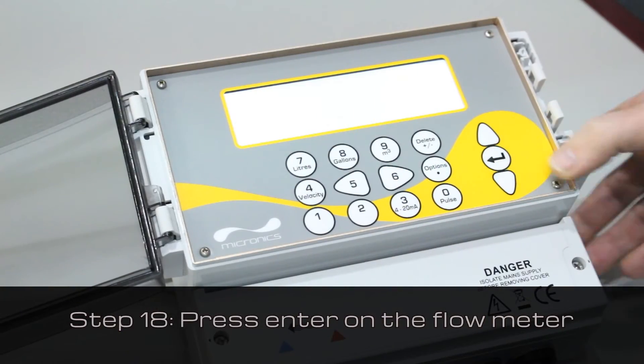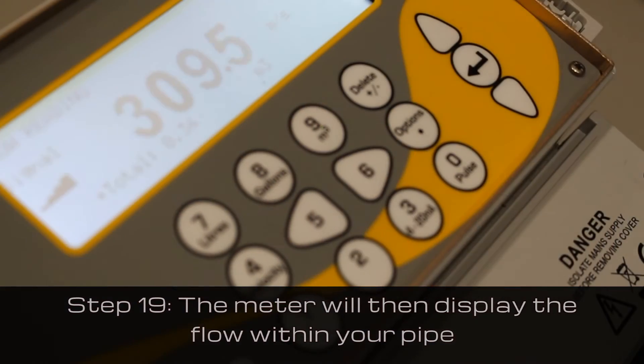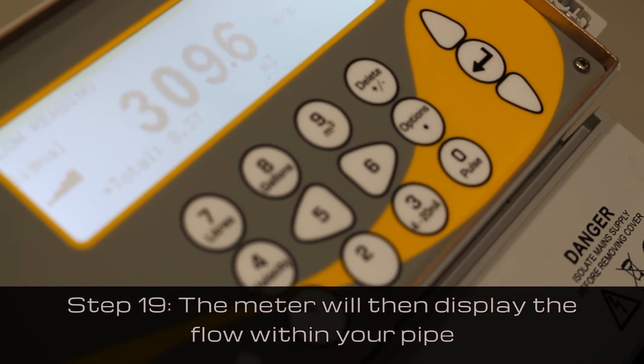Press enter on the flow meter. Once the flow has been switched on, the meter will display the flow within your pipe.